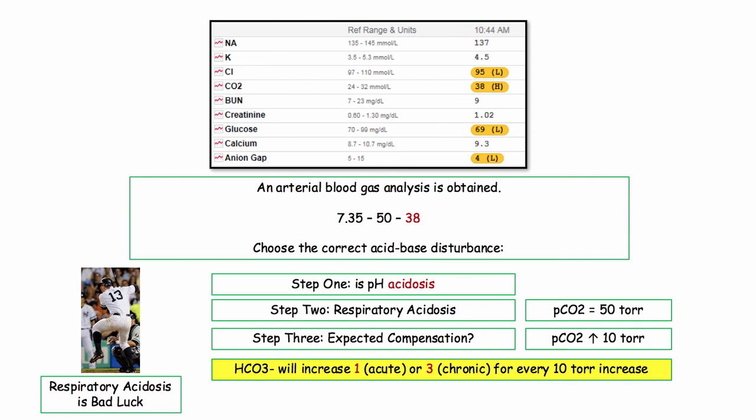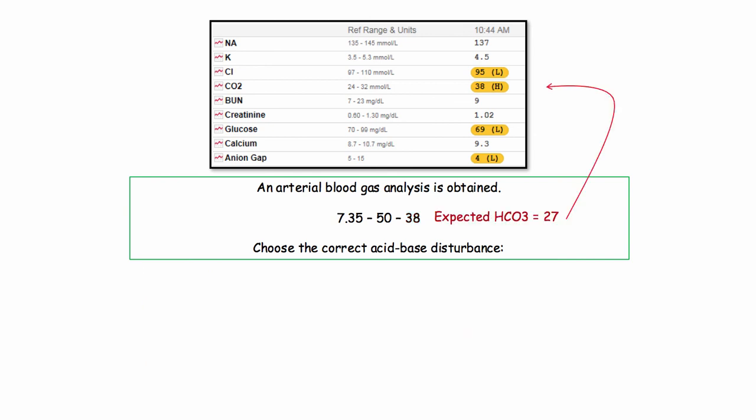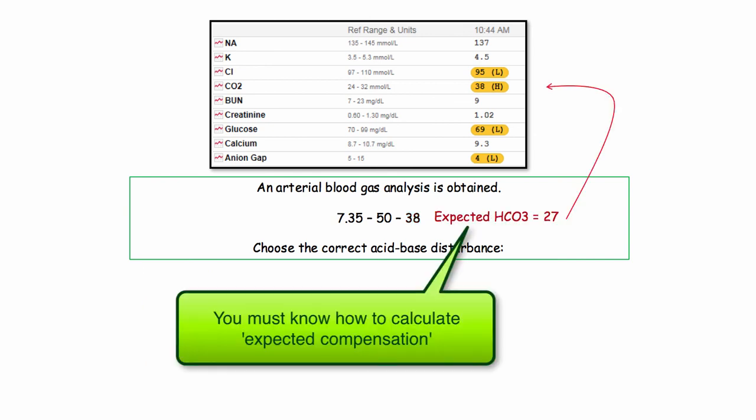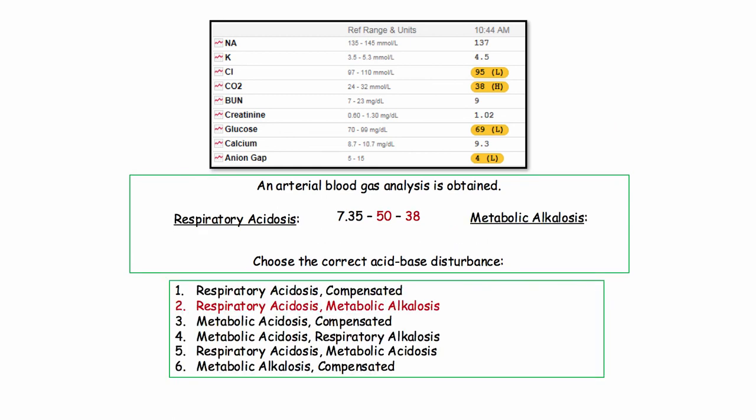So let's apply the compensation rule. As the CO2 is increased by 10, I applied the chronic rule of 3. In this instance, it didn't matter if I calculated the expected compensation as 1 or 3, since the bicarb of 38 is so far in excess of the expected value, we know there is a mixed disturbance. Applying this information, we know the patient has respiratory acidosis based on the initial determination of pH and pCO2. But we also know the patient has metabolic alkalosis, as the bicarb is in excess of predicted. So this ABG presents a mixed disturbance.